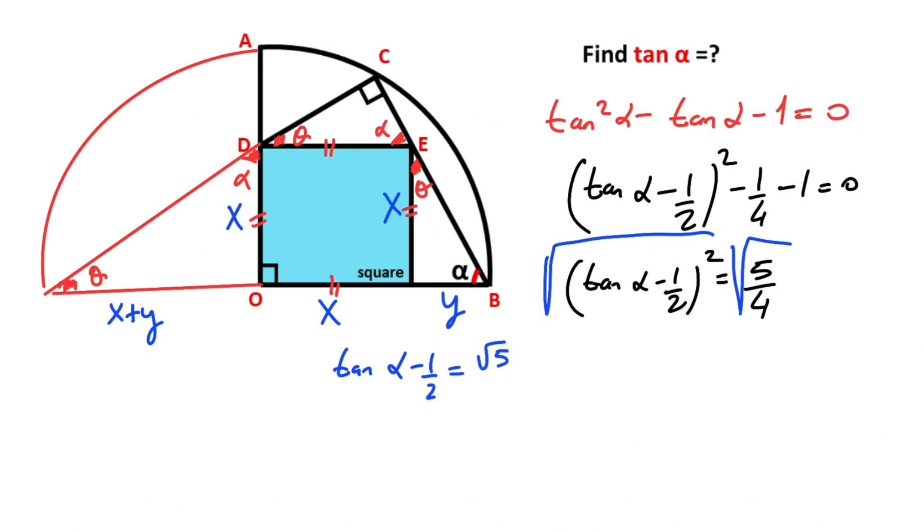...square root of five over two. Note that the second root is less than zero, so we cancel it out. Therefore, tangent alpha equals square root of five plus one over two. If you pay attention, this ratio is also the golden ratio.